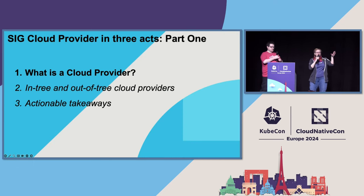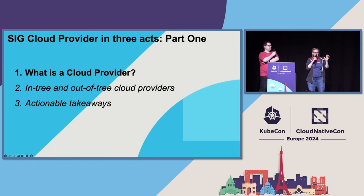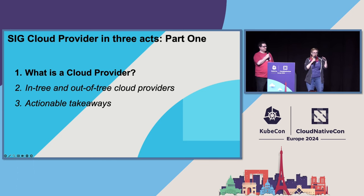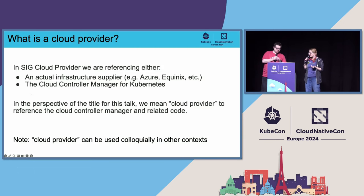We have three things we're going to talk about today. We're going to do a quick overview of what exactly we mean when we say 'cloud provider,' because that's one of those semantically overburdened terms. Then we're going to talk about the migration of in-tree to out-of-tree. And then we'll give you a few actionable takeaways.